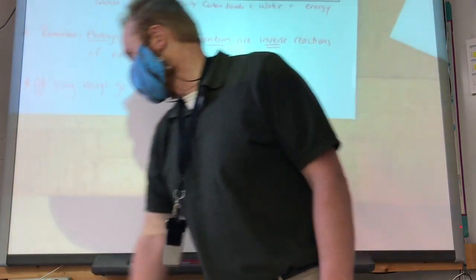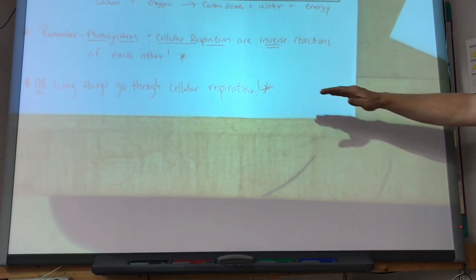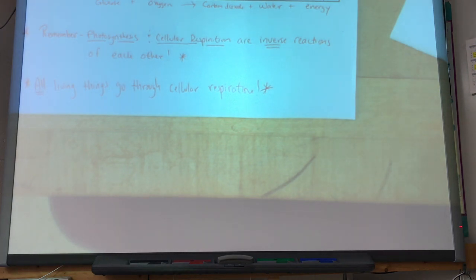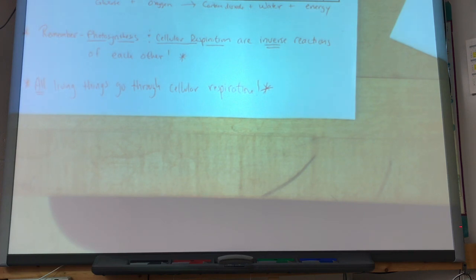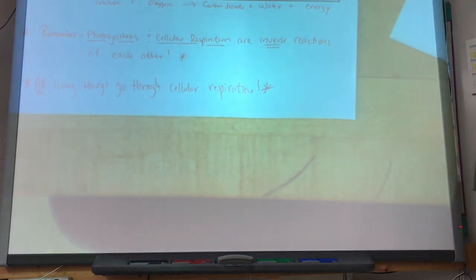Remember: photosynthesis and cellular respiration are inverse reactions of each other — the products of one are the reactants for the other. All living things go through cellular respiration: fungi, animals, humans, and plants. Plants produce their own glucose through photosynthesis and use it for cellular respiration. We have to eat other things to get glucose. Plants, algae, and some bacteria go through photosynthesis.